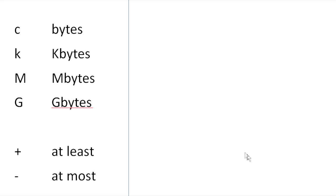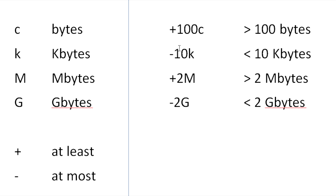For the -size option, we can specify at least or at most files of a given size in bytes, kilobytes, megabytes, or gigabytes. These are case sensitive: c and k are lowercase, while M and G are uppercase. Plus means at least, and minus means at most. For example: +100c means greater than 100 bytes, -10k means less than 10 kilobytes, +2M means greater than 2 megabytes, and -2G means less than 2 gigabytes.